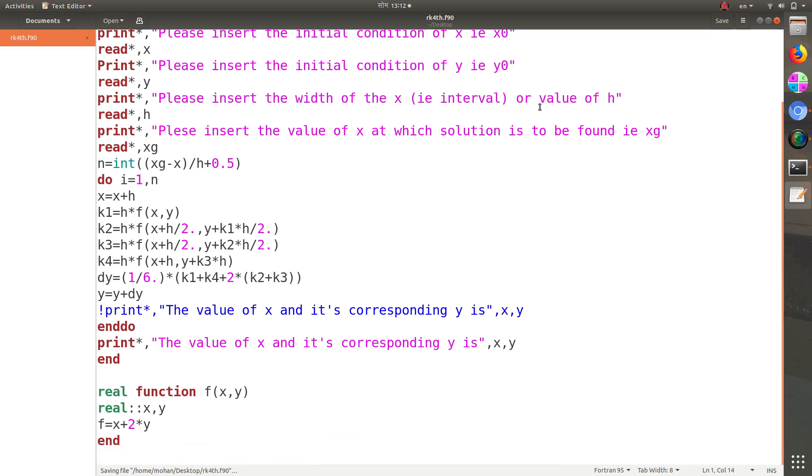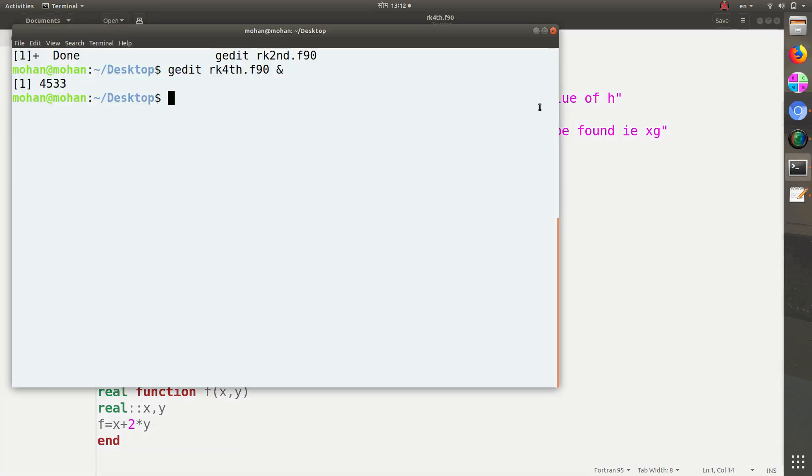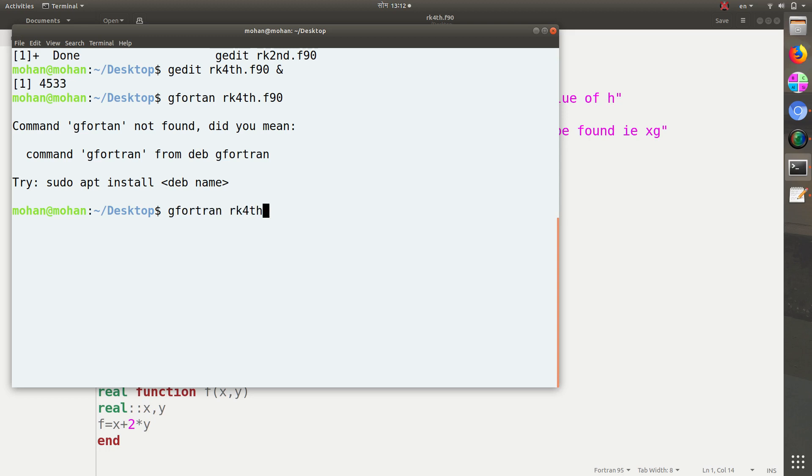We can save this and compile this from the terminal. gfortran rk4.f90. Compile this. gfortran, sorry spelling is mistake. FORTRAN, okay. Now it should be right, I think. Yes.